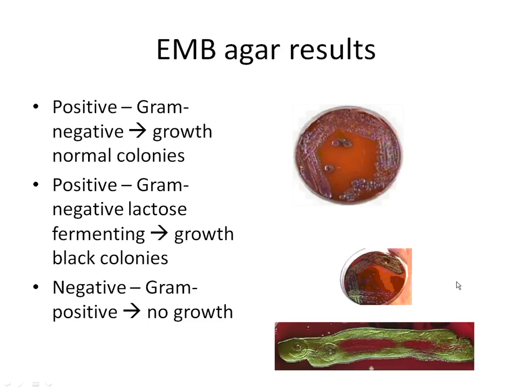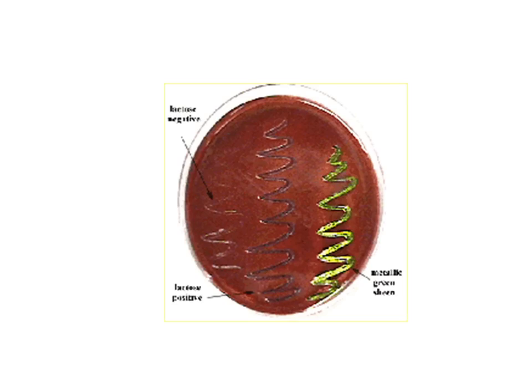This next image shows an EMB agar streaked with three different bacteria. In the first streak, there is a line of bacteria growing in a whitish color. Since it's growing it is gram-negative, but having no color means it cannot ferment lactose. In the second streak, bacteria is growing in a dark purple-black color, representing a gram-negative that does ferment lactose. The third streak is also growing — gram-negative — and shows a metallic green color, which is characteristic of E. coli. Any time you see this metallic green color, it automatically indicates E. coli is present.